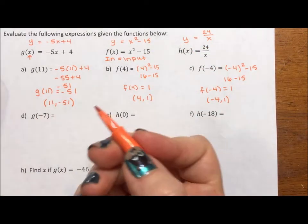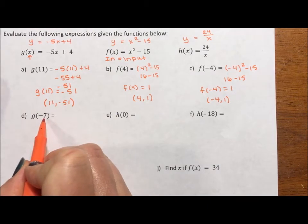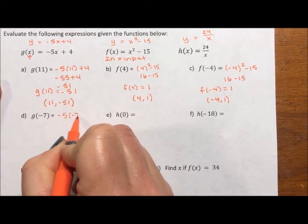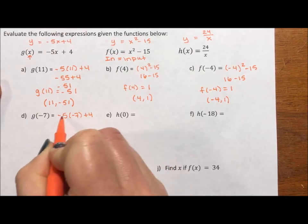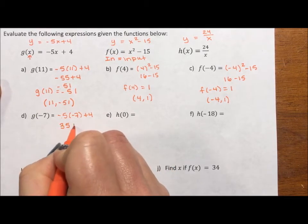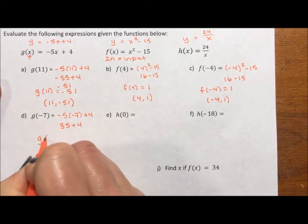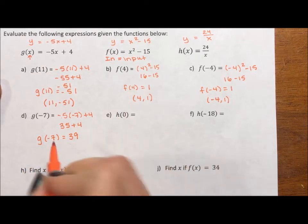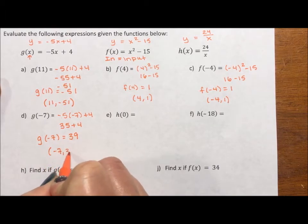g(-7). Substitute -7 in for x for the g(x) graph. So -5 times -7 plus 4. Negative times a negative is a positive. So g(-7) equals 39. In other words, (-7, 39) is a point on this graph.